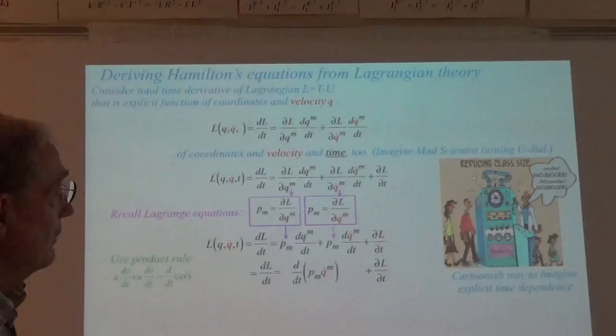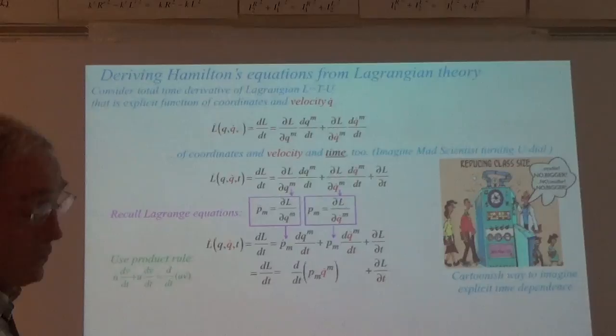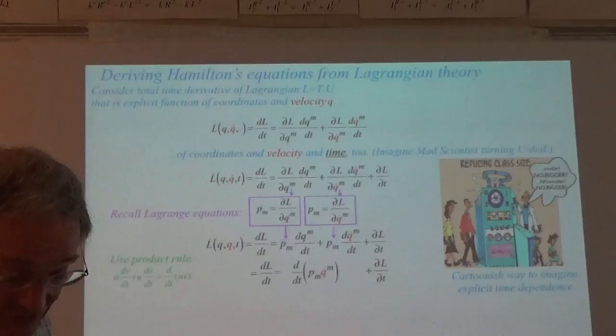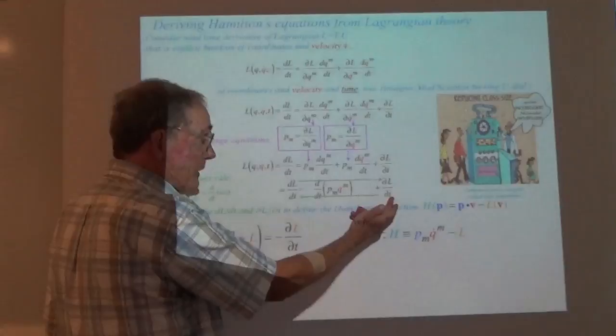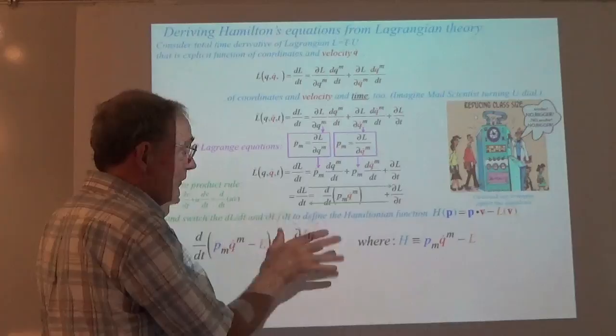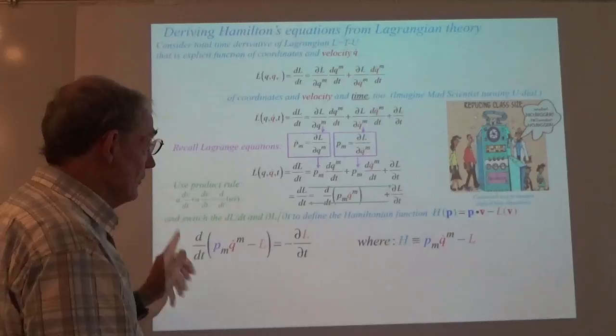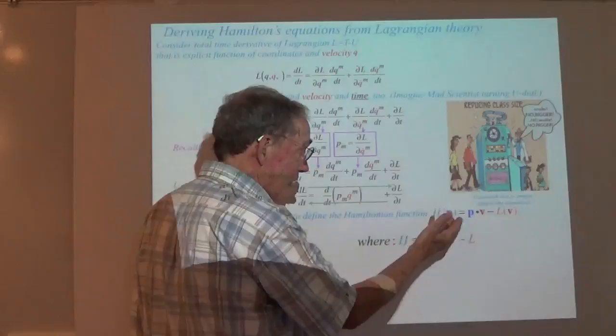We're going to use the product rule. And the idea is, once you've done that, you get an equation where you have the partial derivative of L with respect to T, the total derivative due to everything's motion — DL/DT — and we just switch those. That pretty much gives you the Hamiltonian function in a form which will eventually be just a function of momentum and coordinates.